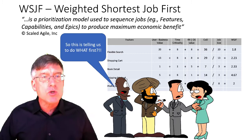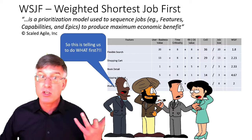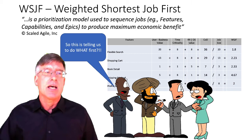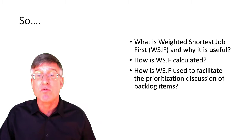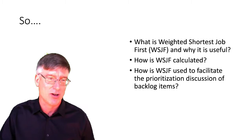So as you remember, Weighted Shortest Job First is the prioritization model that's used in SAFe to sequence jobs, features, capabilities, and epics to get the best economic benefit. What we want to do is understand why it's useful, how it's calculated, and how WSJF is used to facilitate the prioritization discussion of backlog items.